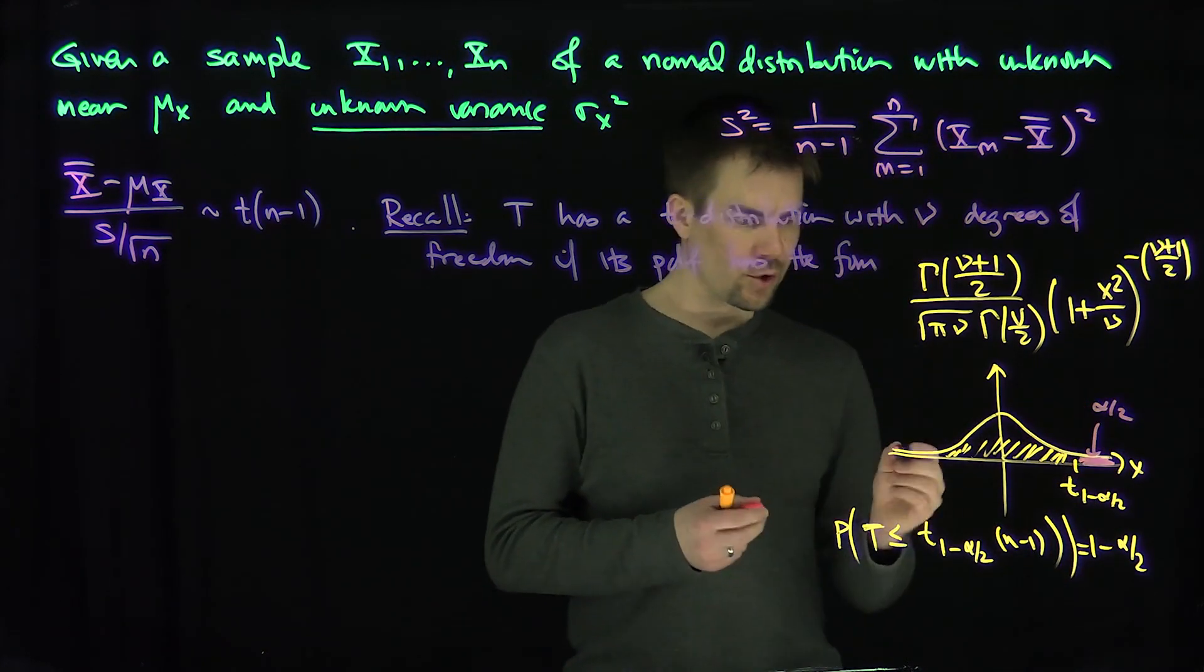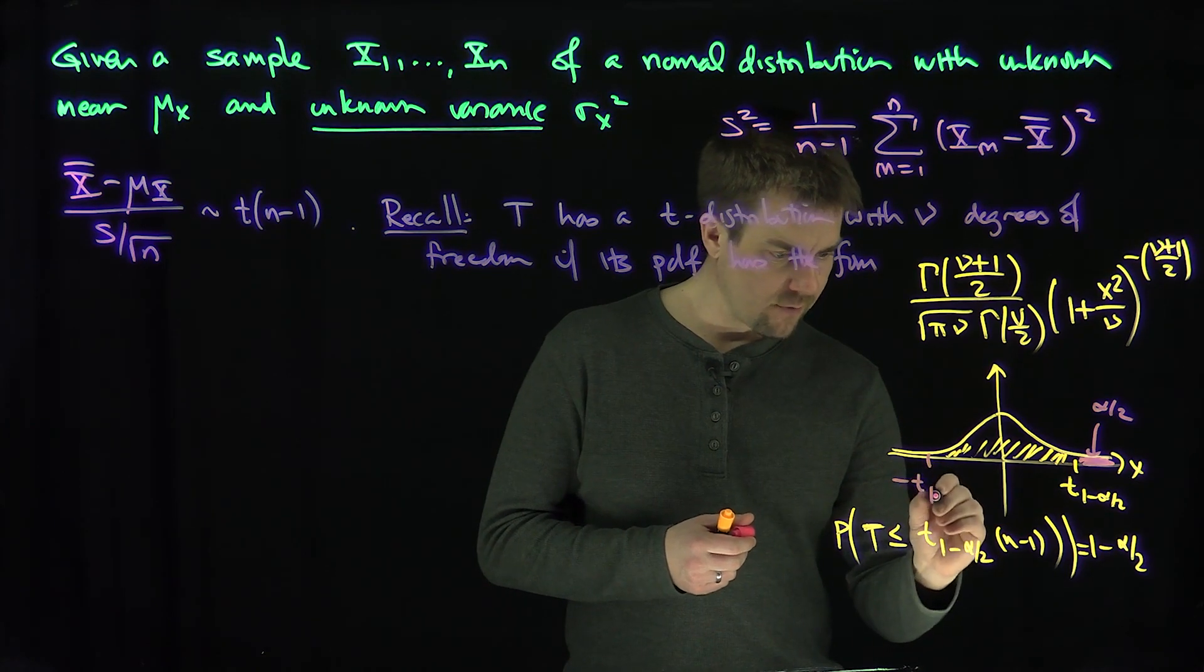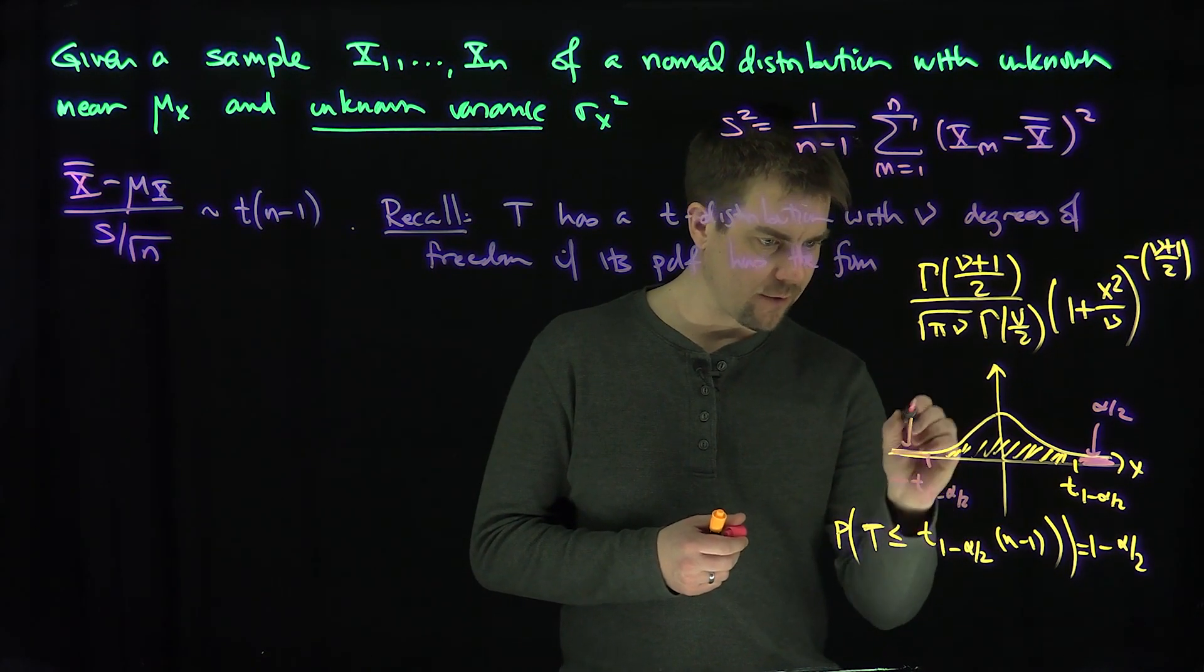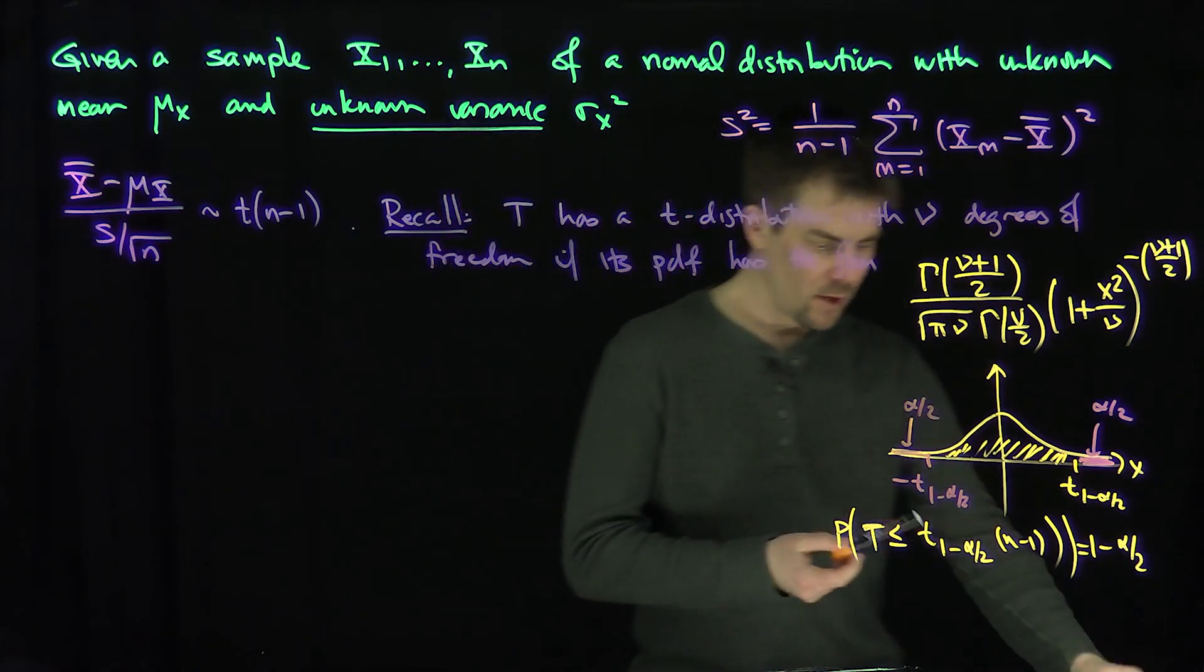And since this is a symmetric distribution, if I look at this value over here, negative t of 1 minus alpha over 2, then the same thing happens. Then I get an alpha over 2 mass over here. So it's a symmetric distribution. So I'm going to use this for my confidence intervals now.